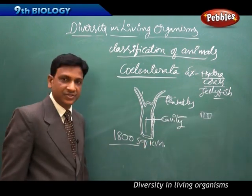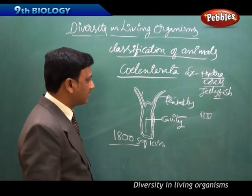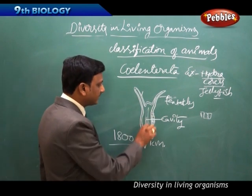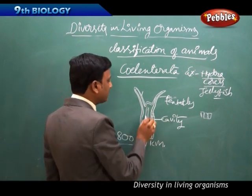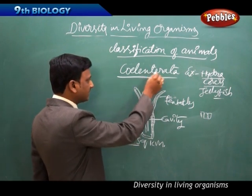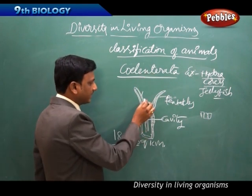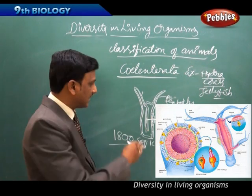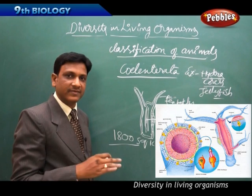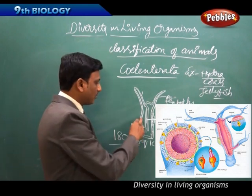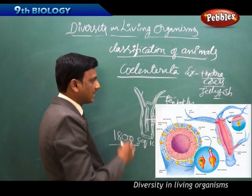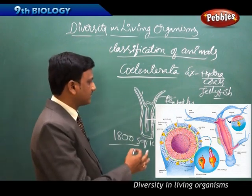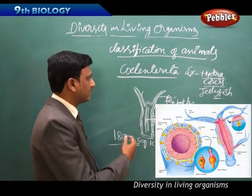Sea anemone, jellyfish, coral, and hydra are examples of Coelenterata. Their key features are a body cavity (coelum), tentacles, and a two-layered body with an outer and inner lining. These organisms capture and feed on other organisms.